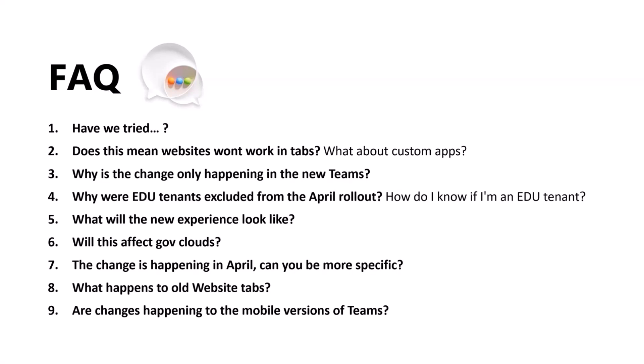Why were EDU tenants excluded from the April rollout, and how do you know if you're an EDU tenant? After speaking with education customers, we realized we had to be sensitive about making changes while schools and universities were actively in session across the northern and southern hemispheres. We'll have more information for education customers at a later date. As for determining if you're an education tenant, your tenant needs to have academic licenses A1 to A5 for either students or faculty. If you're an IT admin, you should be able to see an education section in the Teams admin portal or have access to education features in the Teams app, such as assignments and class notebook.